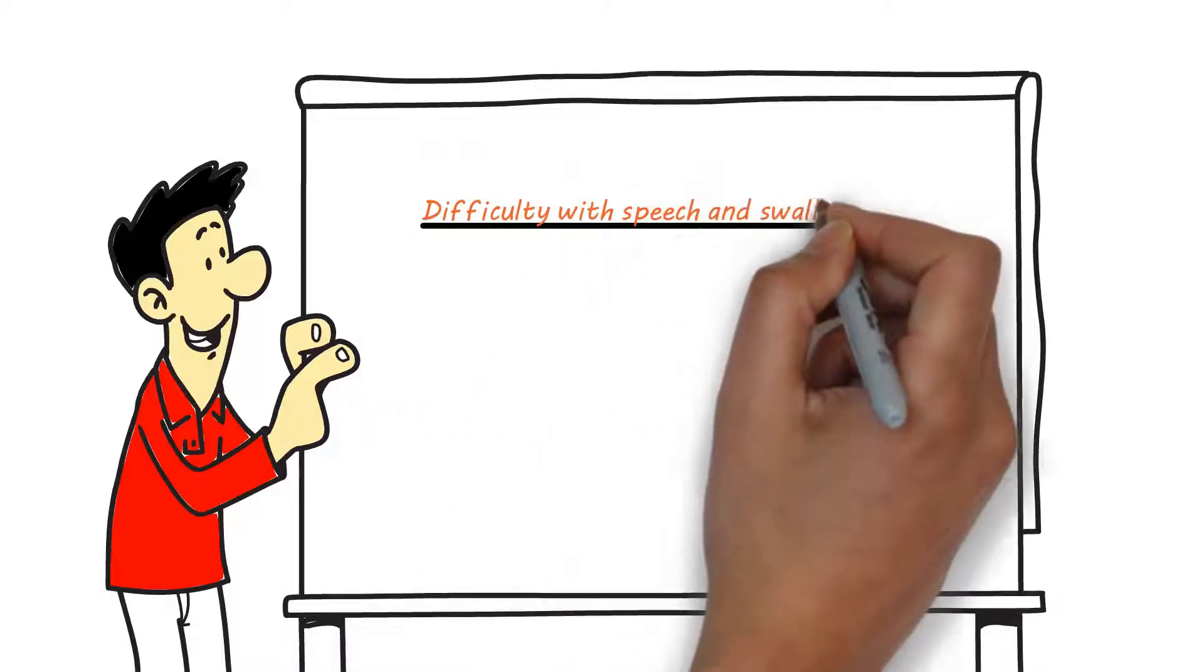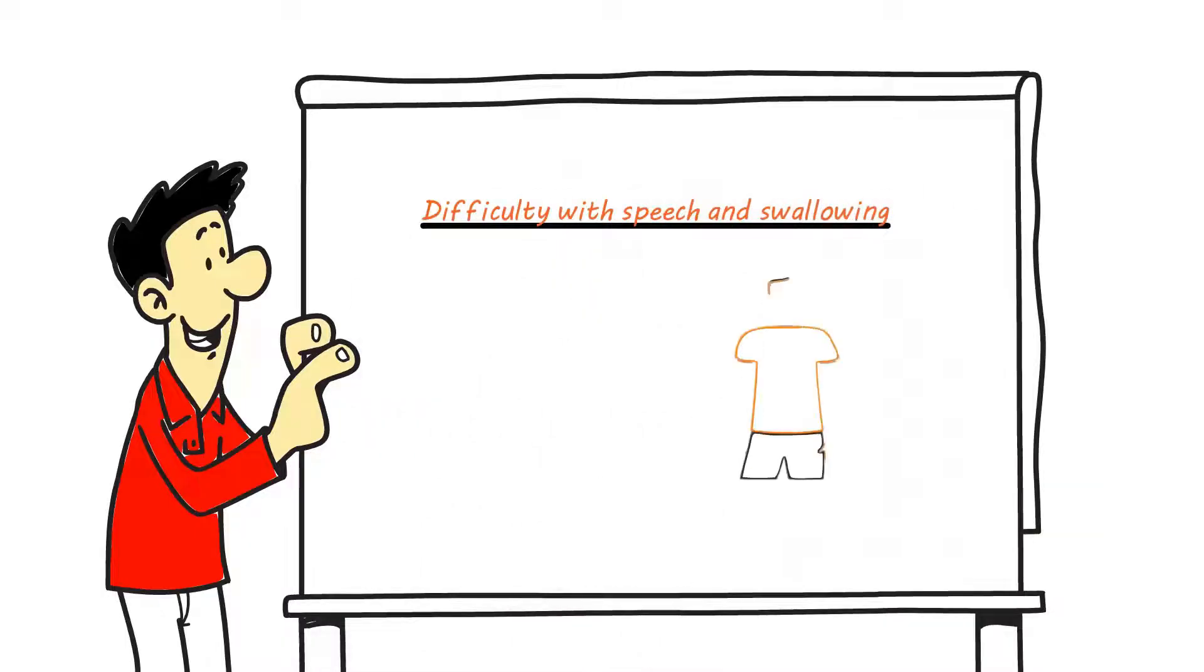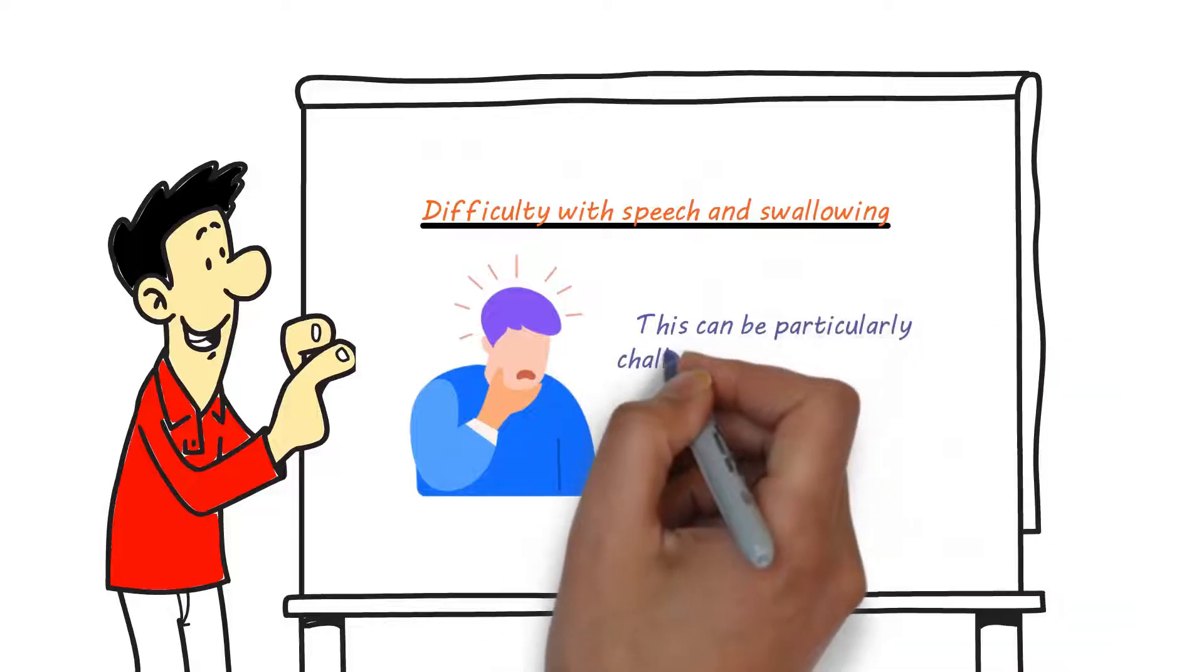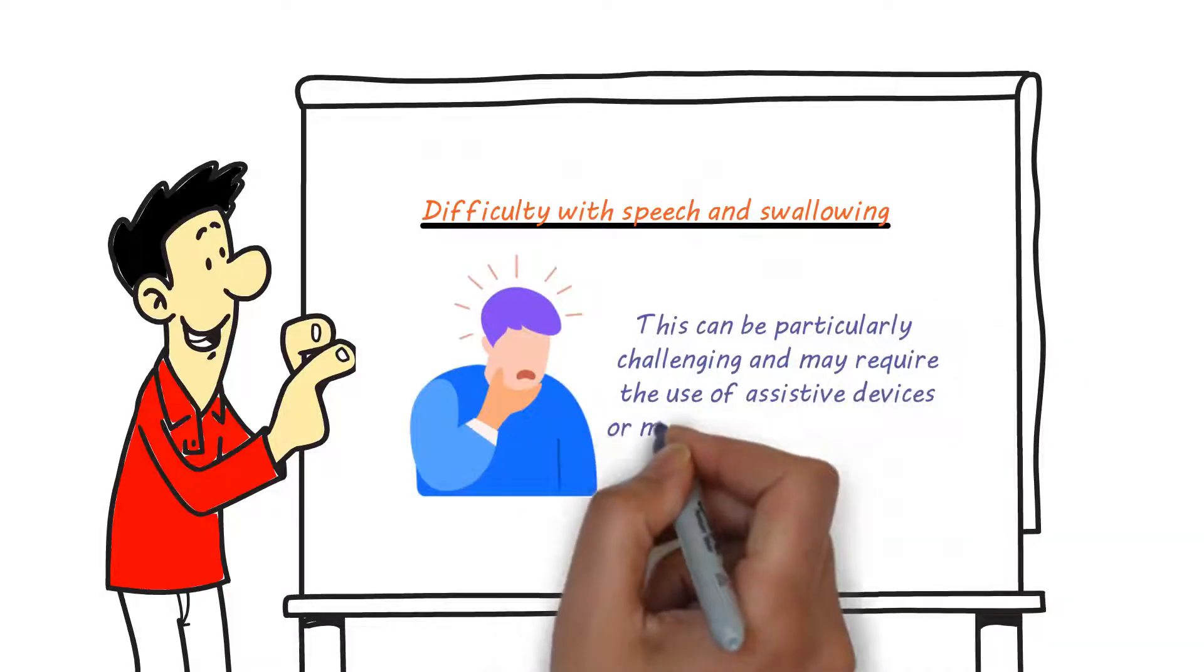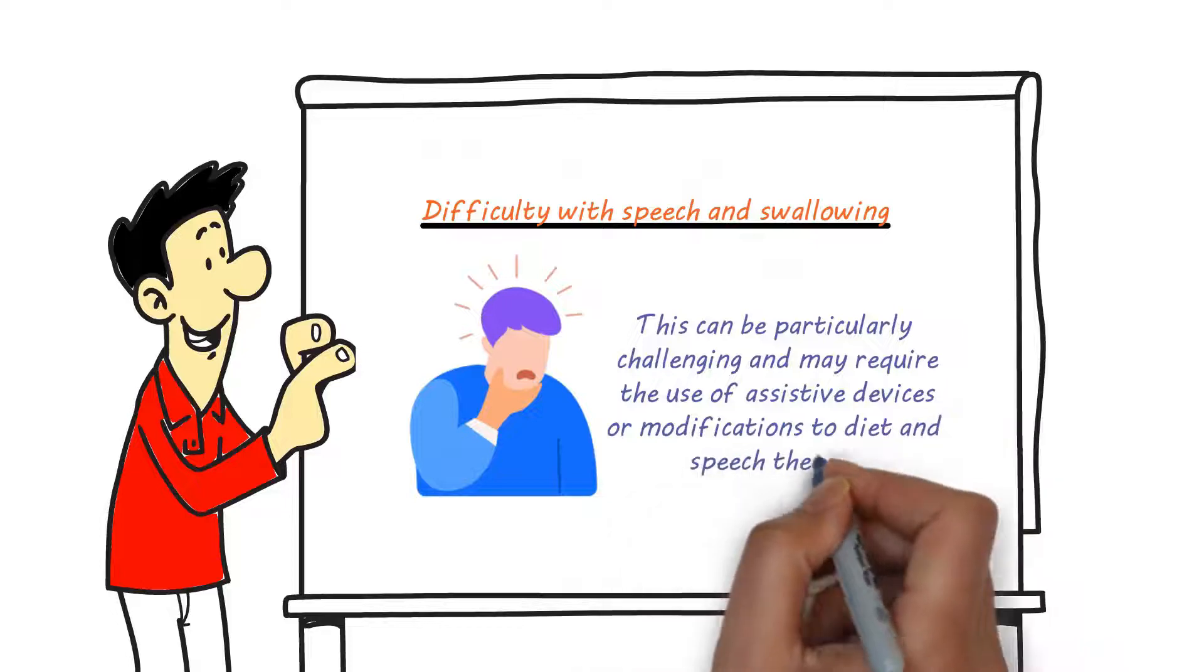Difficulty with Speech and Swallowing. Motor neuron disease can also affect the muscles involved in speech and swallowing, making it difficult to communicate or eat. This can be particularly challenging and may require the use of assistive devices or modifications to diet and speech therapy.